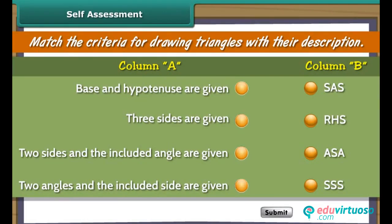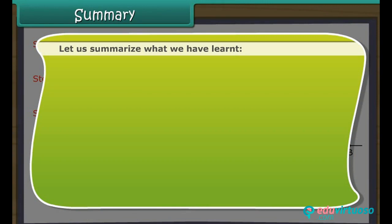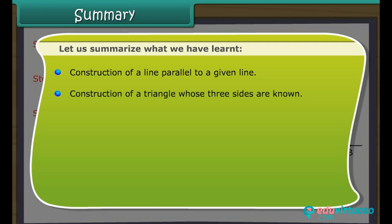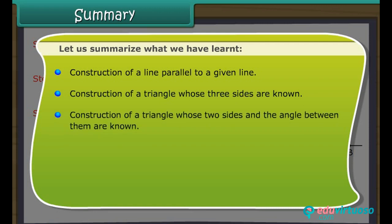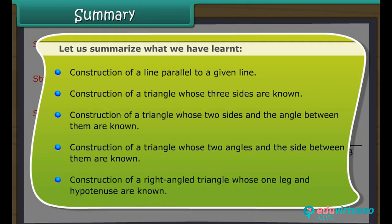Self-assessment: Match the criteria for drawing triangles with their description. Summary: Let us summarize what we have learnt — construction of a line parallel to a given line; construction of a triangle whose three sides are known; construction of a triangle whose two sides and the angle between them are known; construction of a triangle whose two angles and the side between them are known; and construction of a right angled triangle whose one leg and hypotenuse are known.